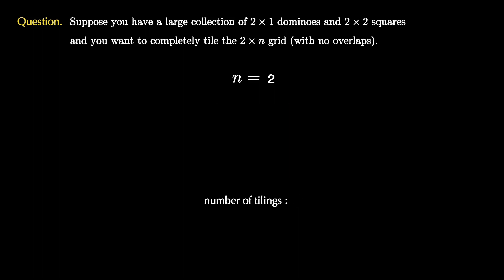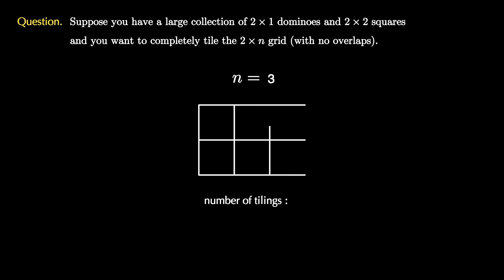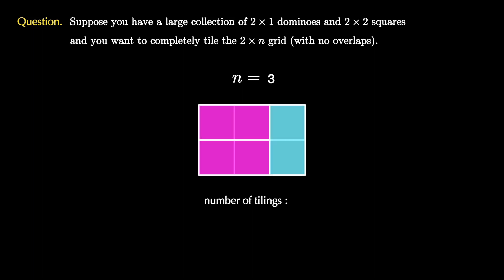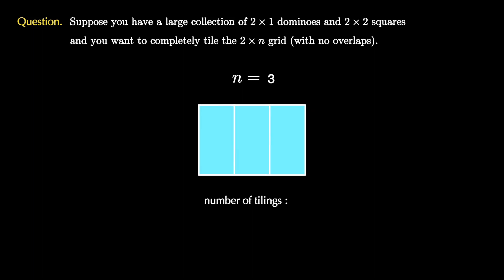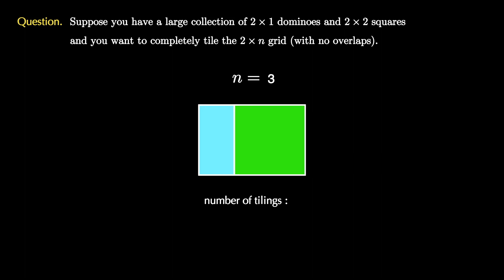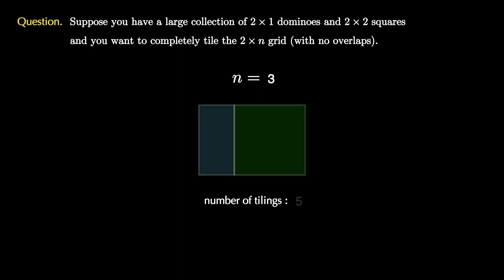We can continue gathering data by trying the n equals 3 grid. In this case, we can list out all of the tilings, and once we do that, we see there are five total tilings of the 2 by 3 board.